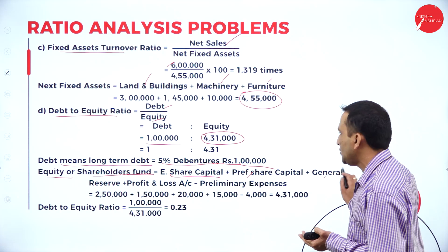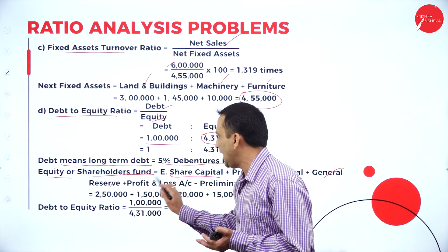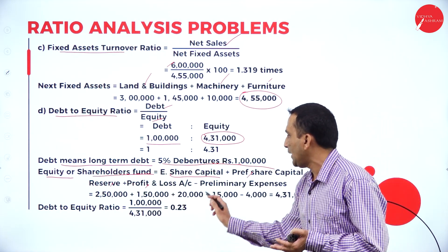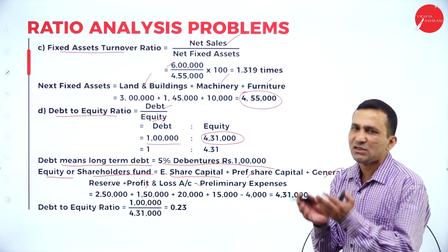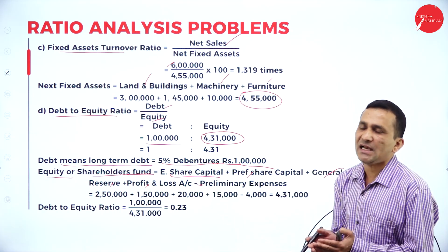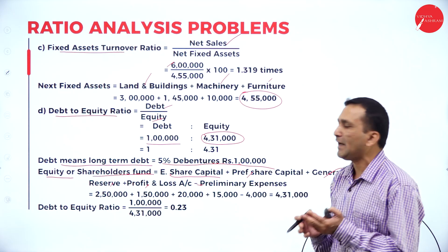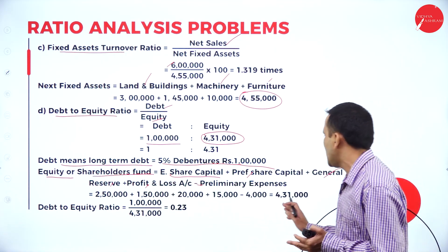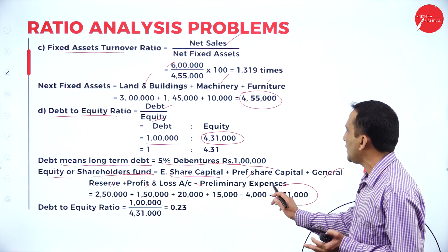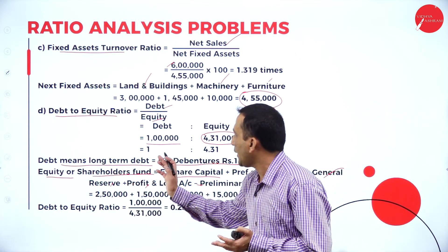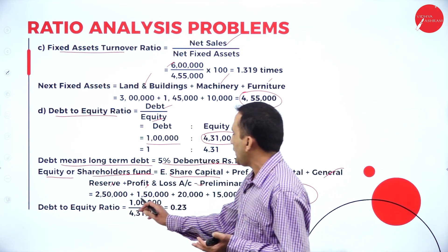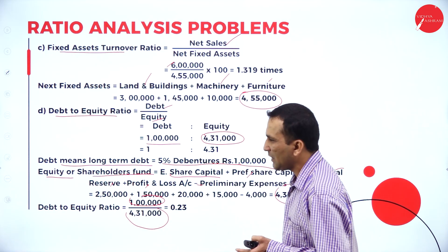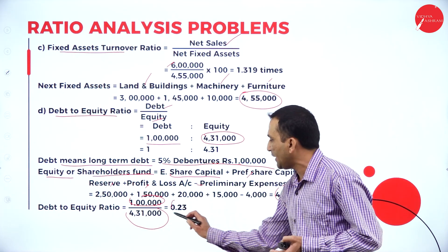Equity is 4,31,000. For shareholders' fund: equity shares, preference shares, general reserve, and P&L profit — but subtract the preliminary expense from the asset side. Finally, shareholders' fund is 4,31,000. Debt 1,00,000 divided by equity 4,31,000 gives 0.23.